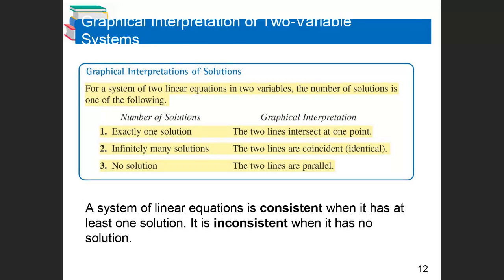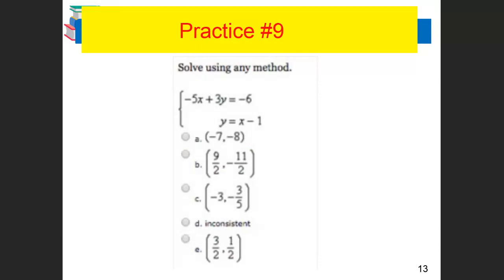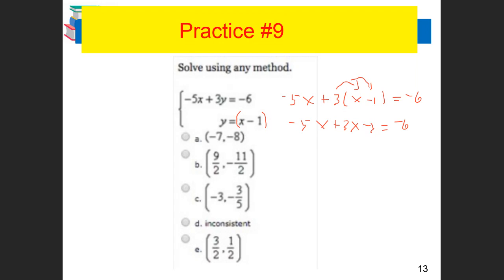In this practice problem it says solve using any method you want. Looking at it, there's no way I'm using the addition method — this problem is set up for substitution because I know Y equals X minus 1. So I rewrite it as negative 5X plus 3 times (X minus 1) equals negative 6. Distributing: negative 5X plus 3X minus 3 equals negative 6. Combining terms: negative 2X minus 3 equals negative 6. Adding 3 to both sides gives negative 2X equals negative 3... wait, let me recheck — I get X equals two thirds.